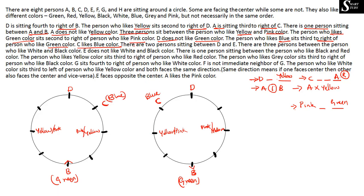Next: there are two persons sitting between D and E, so between D and E there must be a gap of two persons. Counting from D in either direction — 1, 2 — E can be in one of several positions. We have multiple possibilities and are not yet sure where to substitute E, so we keep this information on hold.